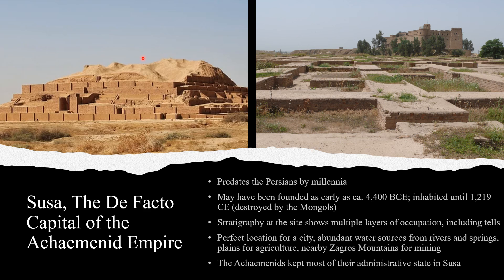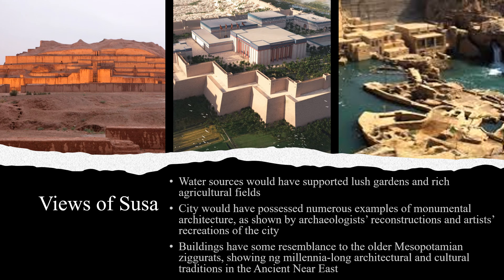Susa is an excellent location for a city — there are abundant water resources in the form of rivers and springs, there are plains for agriculture, and there are the nearby Zagros Mountains, which would have possessed mineral resources that could be mined. The Achaemenids also kept most of their administrative state in Susa, since Persepolis was really just a very large palace complex.